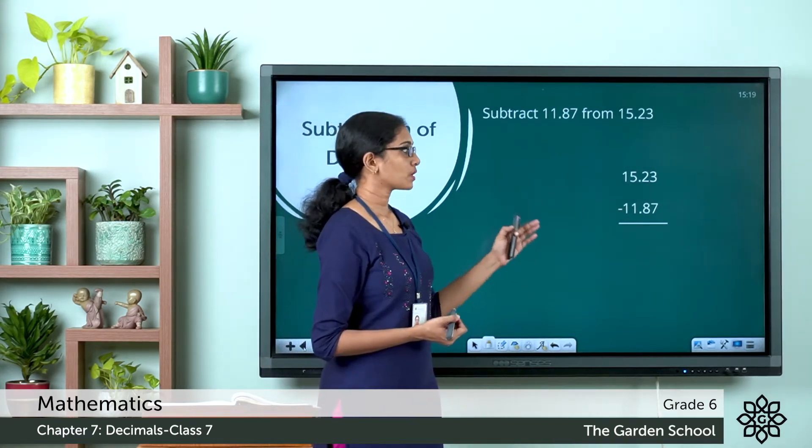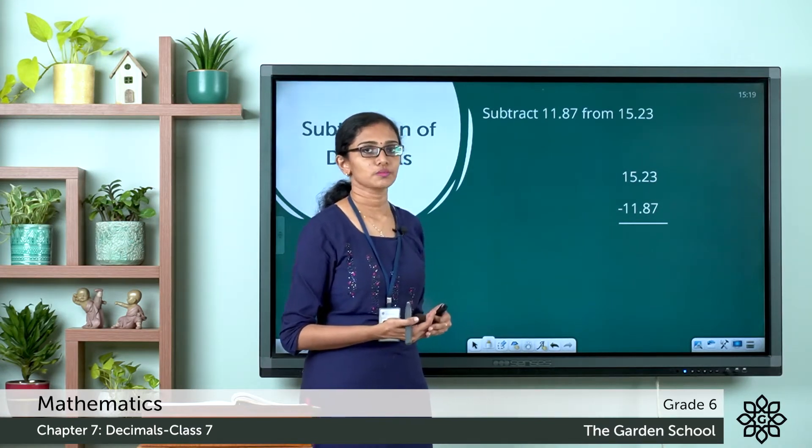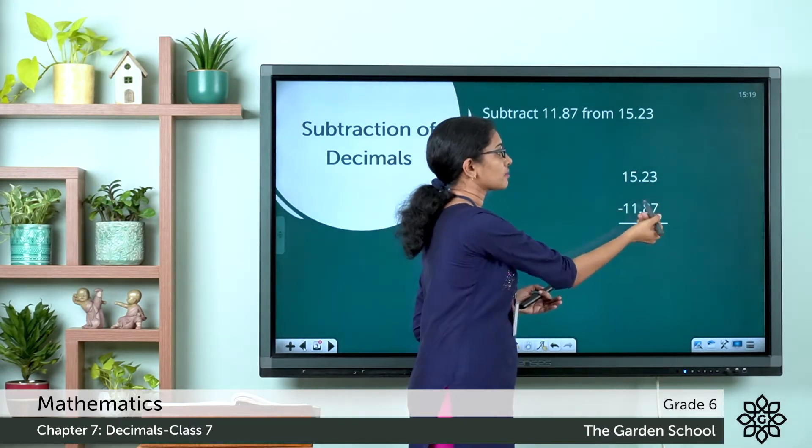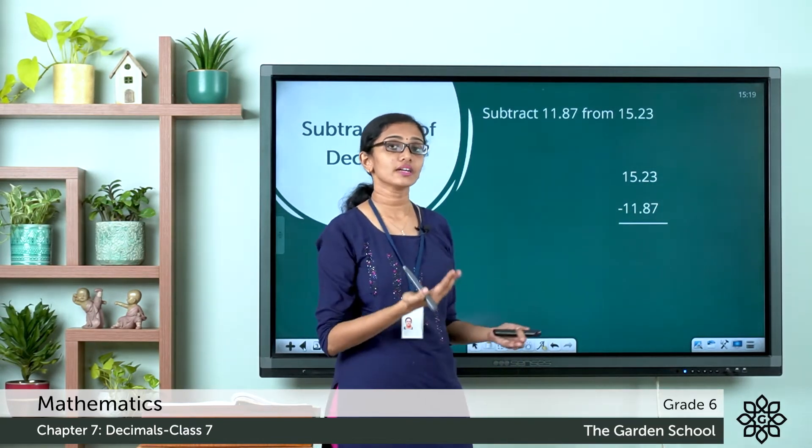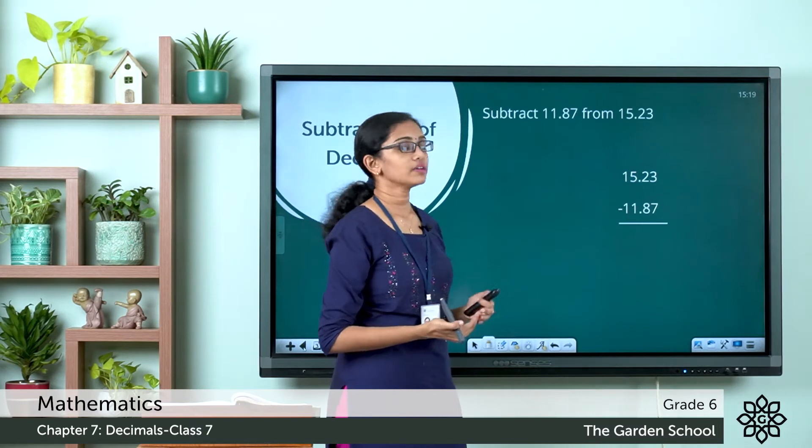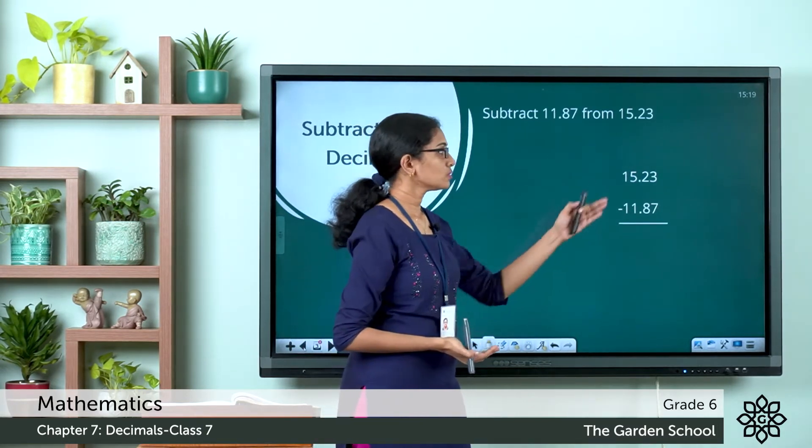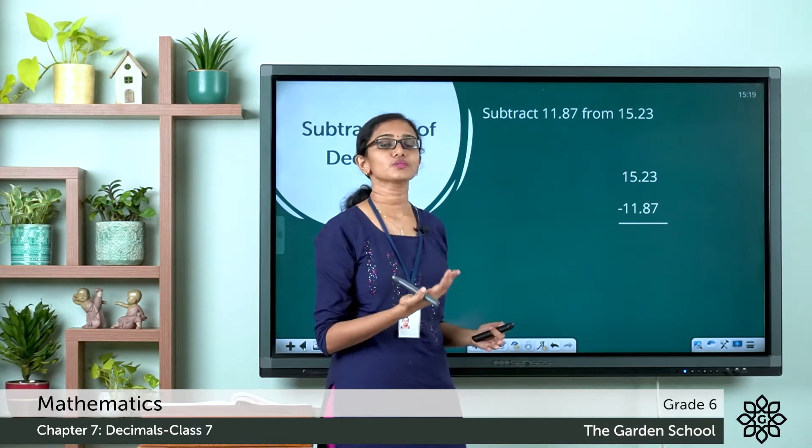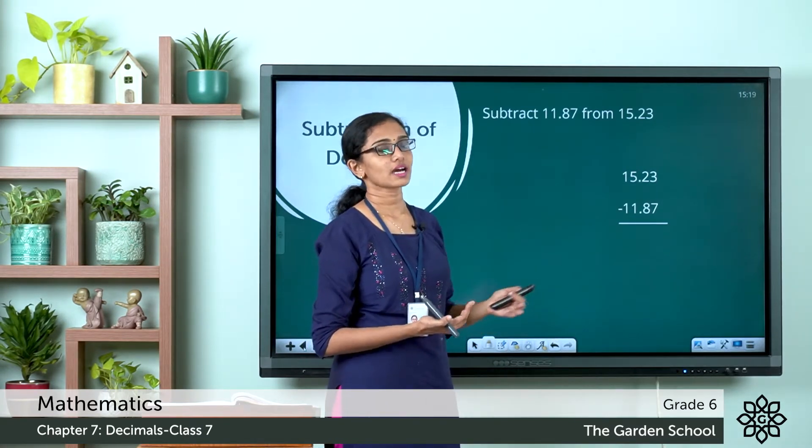Now we are going to start the subtraction process. So starting from the rightmost end, here we have 3 minus 7 or 3 hundredths minus 7 hundredths. So we cannot subtract or take away 7 from 3. So we are going to borrow from the next higher place.